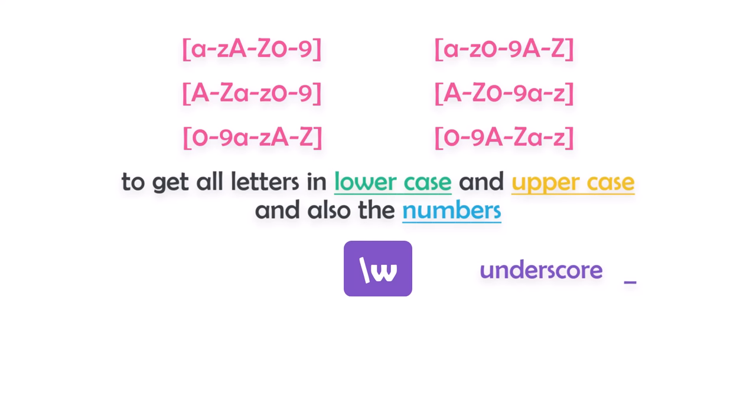We also have \W (uppercase W) to find anything except letters, numbers, or underscore. This pattern finds characters like points, commas, question marks, empty spaces, etc. — everything that is not alphanumeric or underscore.